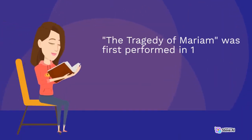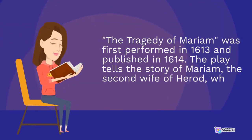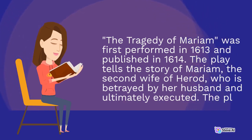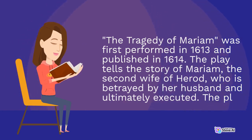The Tragedy of Mariam was first performed in 1613 and published in 1614. The play tells the story of Mariam, the second wife of Herod, who is betrayed by her husband and ultimately executed.